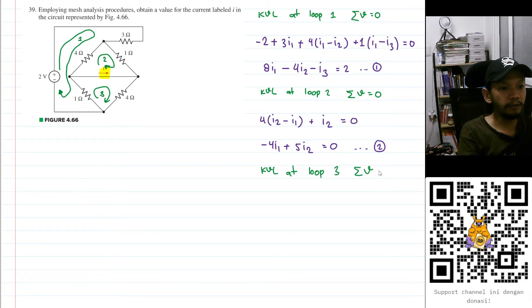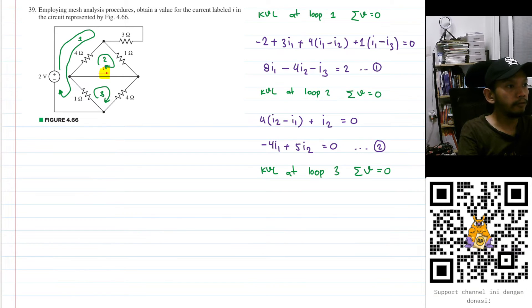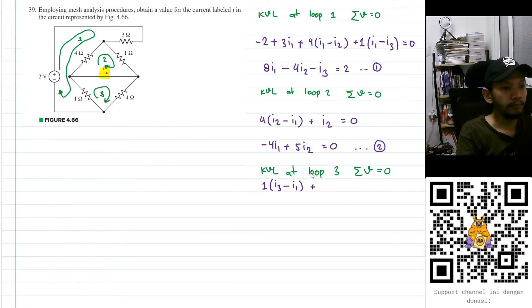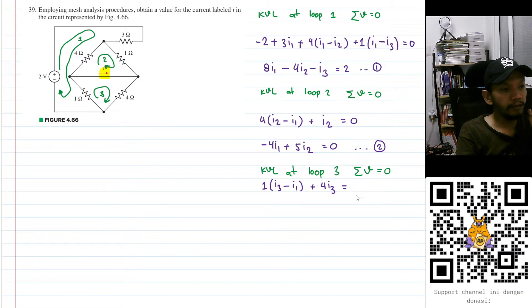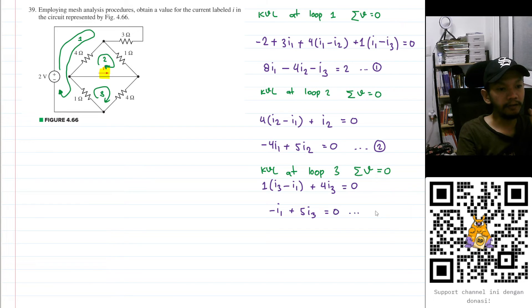KVL at loop three: the sum of voltages in the loop equals zero. Starting with the one-ohm resistor: one multiplied by I₃, but I₁ is flowing in the opposite direction, so minus I₁. Then plus the four-ohm component — the only current through it is I₃ — so plus 4I₃. This gives us -I₁ + 5I₃ = 0. Let's save this as equation number three.